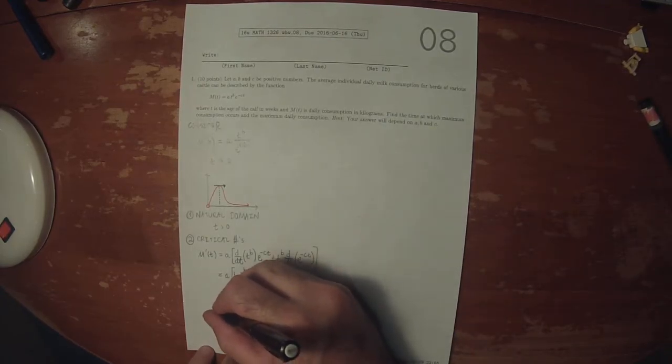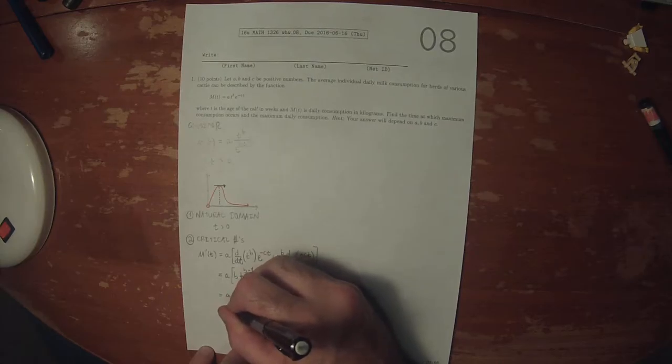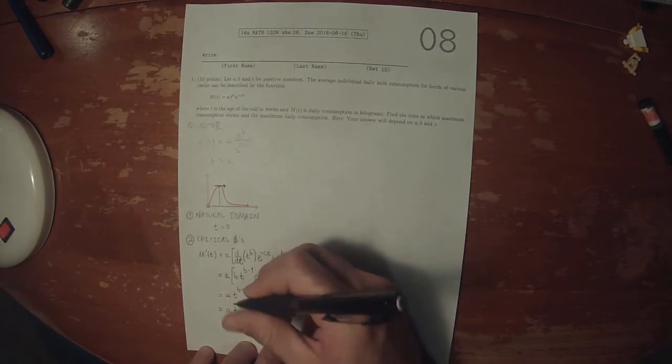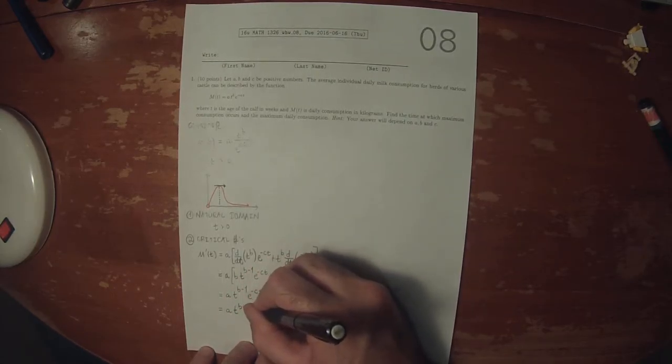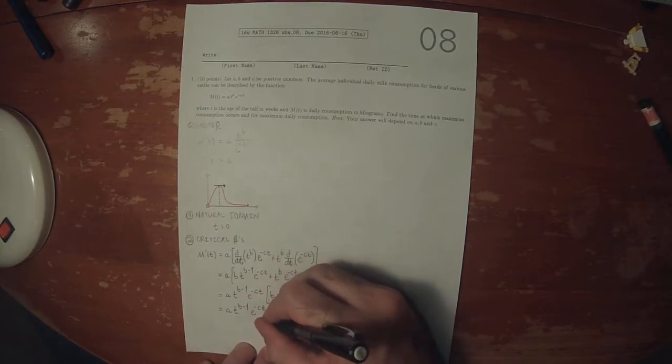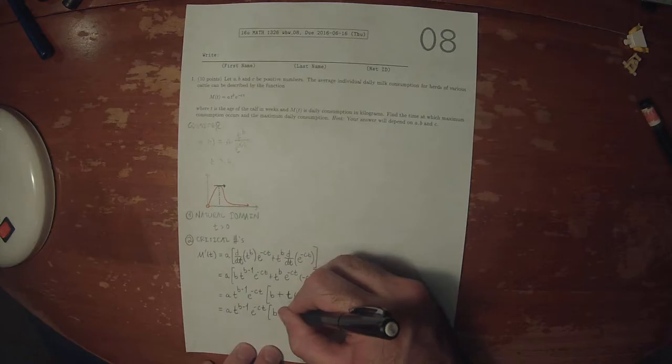So then simplifying a little bit: A, T to B minus 1, E to negative CT, and then B minus CT.